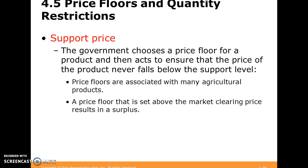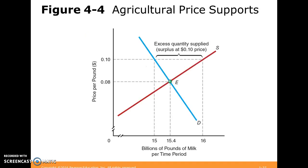In conjunction with a price floor, we can think of a support price — the government chooses a price floor for some product and then acts to ensure that the price will never fall below some support level. Price floors are associated with many agricultural products. A price floor set above the market clearing price — the equilibrium price — is going to result in a surplus. For example, looking at pounds of milk with a floor at around 10 cents, we have a surplus where at 15 cents we have 15 demanded and 16 supplied.